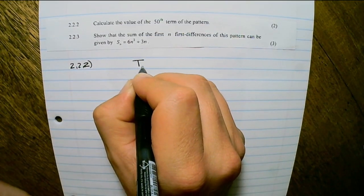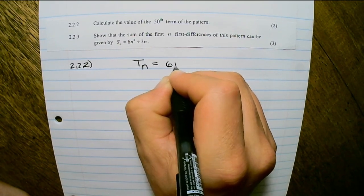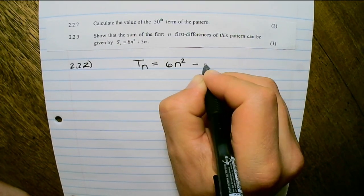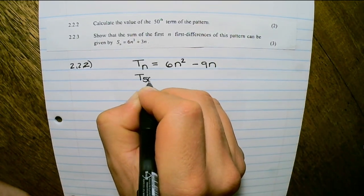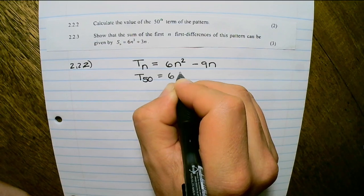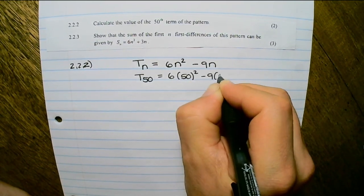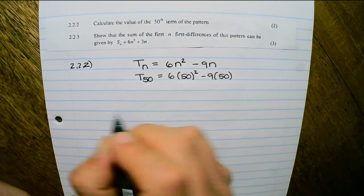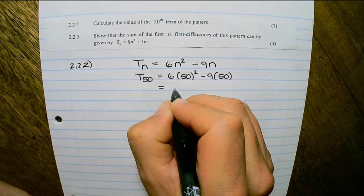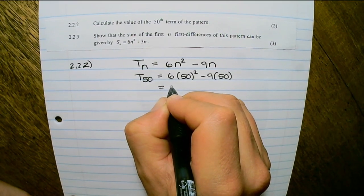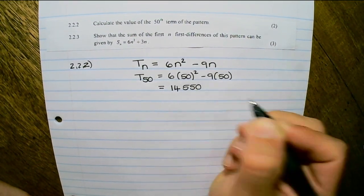We know that tn equals 6n squared minus 9n. The value of the 50th term means we substitute n with 50. Notice that I am using brackets, and when I use my calculator I find that the 50th term is 14,550.